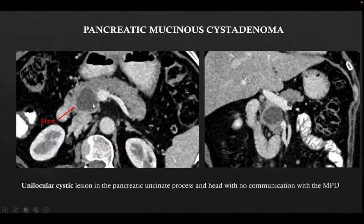This was a case of pancreatic mucinous cystoadenoma. We can see a unilocular cystic lesion in the pancreatic uncinate process which is not communicating with the main pancreatic duct.